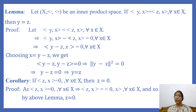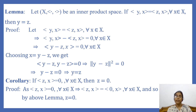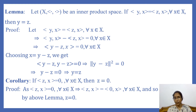Let us prove this lemma. It is given that ⟨y, x⟩ = ⟨z, x⟩ for every x in X. This implies that ⟨y, x⟩ − ⟨z, x⟩ = 0 for every x in X, which implies ⟨y − z, x⟩ = 0 for every x in X by linearity of the inner product. Since y − z is also in X, we can substitute x = y − z, giving ⟨y − z, y − z⟩ = 0, so ‖y − z‖² = 0, hence y − z = 0, that is y = z.